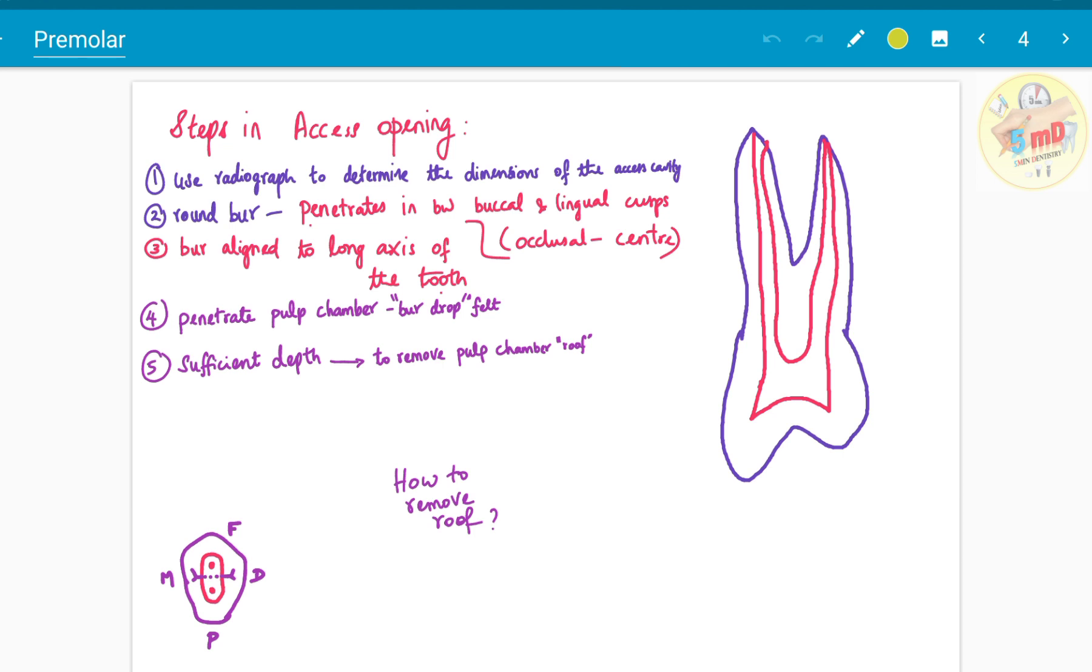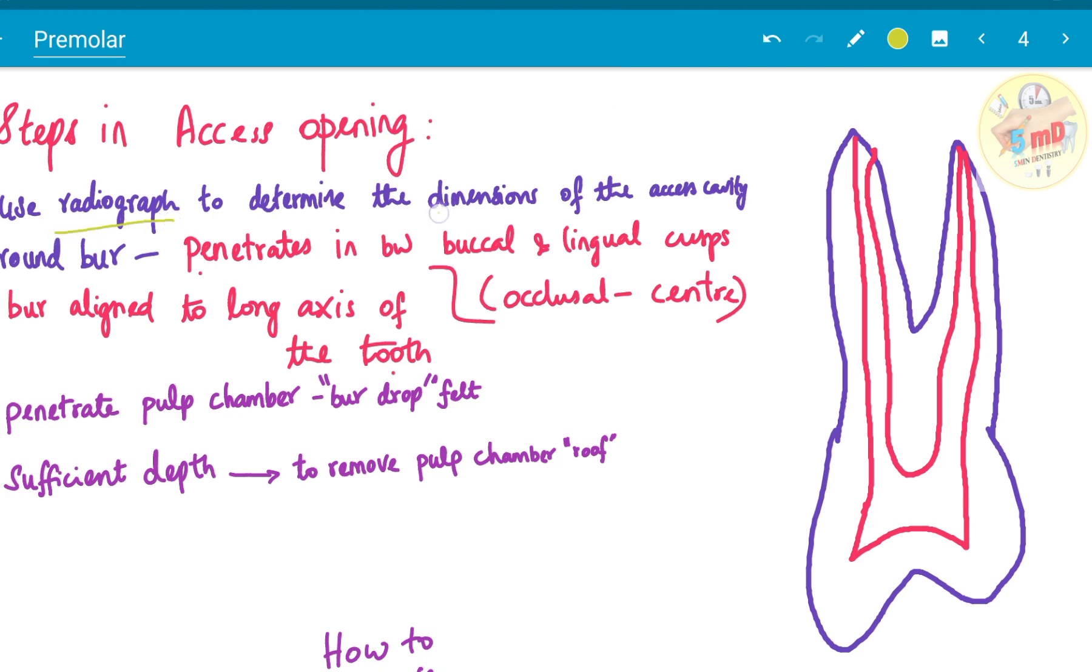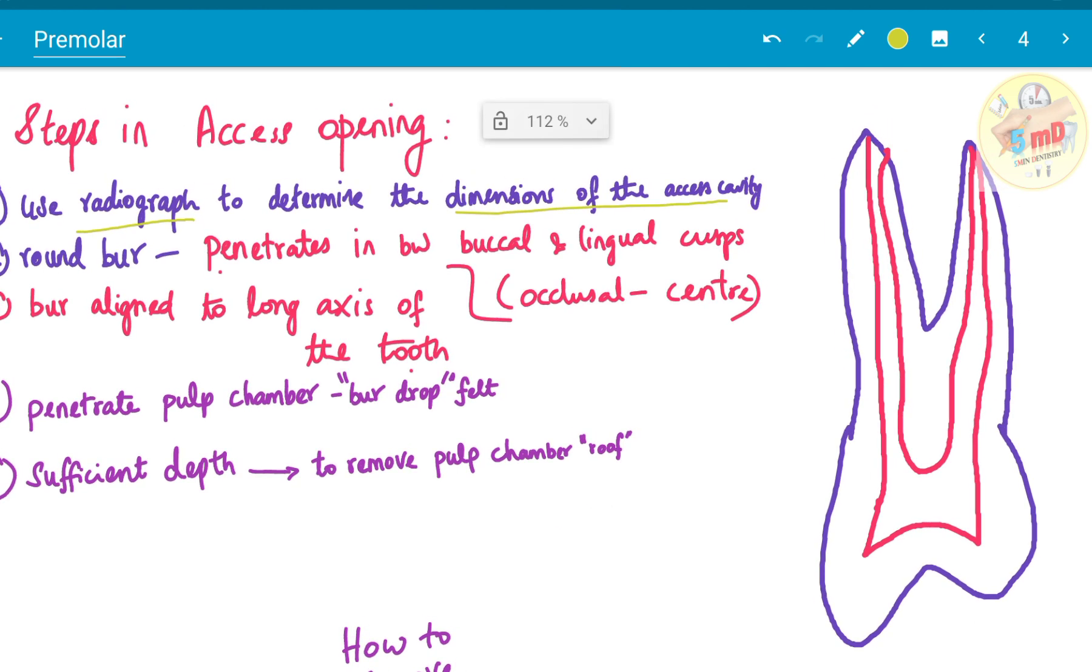What are the steps in access opening? Whatever you do, you should do it in a systematic method to attain the results to maximum success. Use radiograph to determine the dimensions of the access cavity beforehand. And use round burr to penetrate between the buccal and the lingual cusps.